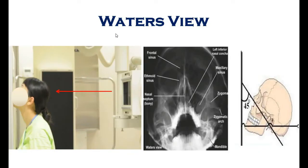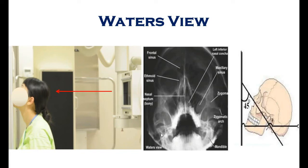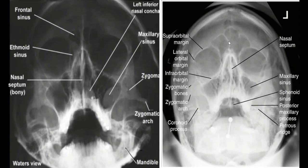The next view is Water's view. In this view, the patient places their mouth and nose against the X-ray film and opens the mouth, while rays are projected from behind. This view is helpful for examining the air sinuses. The frontal, ethmoidal, and maxillary air sinuses are visible, along with the orbit, zygomatic arch, and sphenoidal air sinuses (visible through the open mouth).